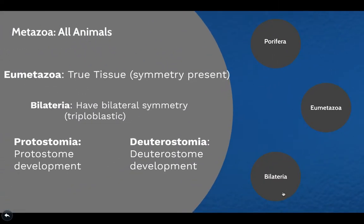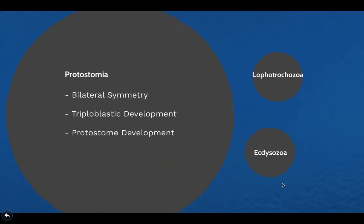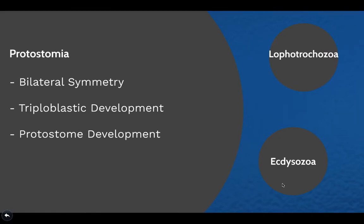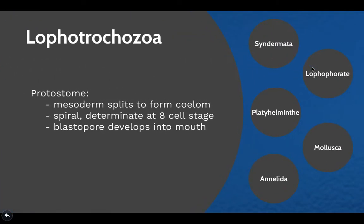Now we're going to take a look at the Bilateria — a reminder that these are part of the larger clade Eumetazoa and the even larger clade Metazoa. Within the Protostomia branch, organisms have bilateral symmetry, are triploblastic, and have protostome development. Protostomes have their mesoderm split into two to form the coelom, are spiral and determinate at the eight-cell stage, and the blastopore develops into a mouth instead of an anus.